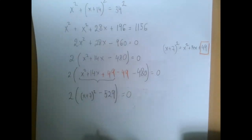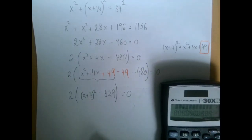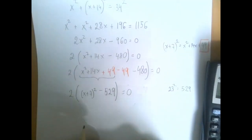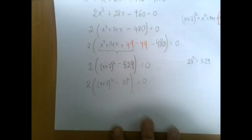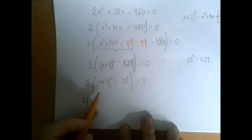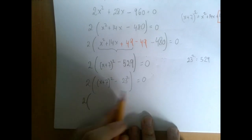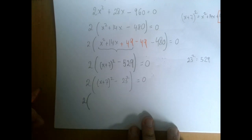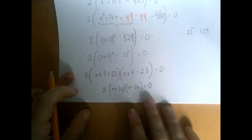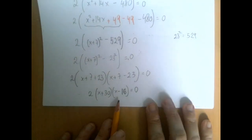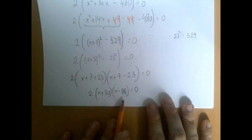This would be all good news if 529 were a perfect square — and it is: 23 squared is 529. We have a great situation for the difference of squares theorem. This difference of two squares can be factored into a pair of conjugates, namely (x plus 7 plus 23) and (x plus 7 minus 23). We clean up and get 2 times (x plus 30) times (x minus 16).